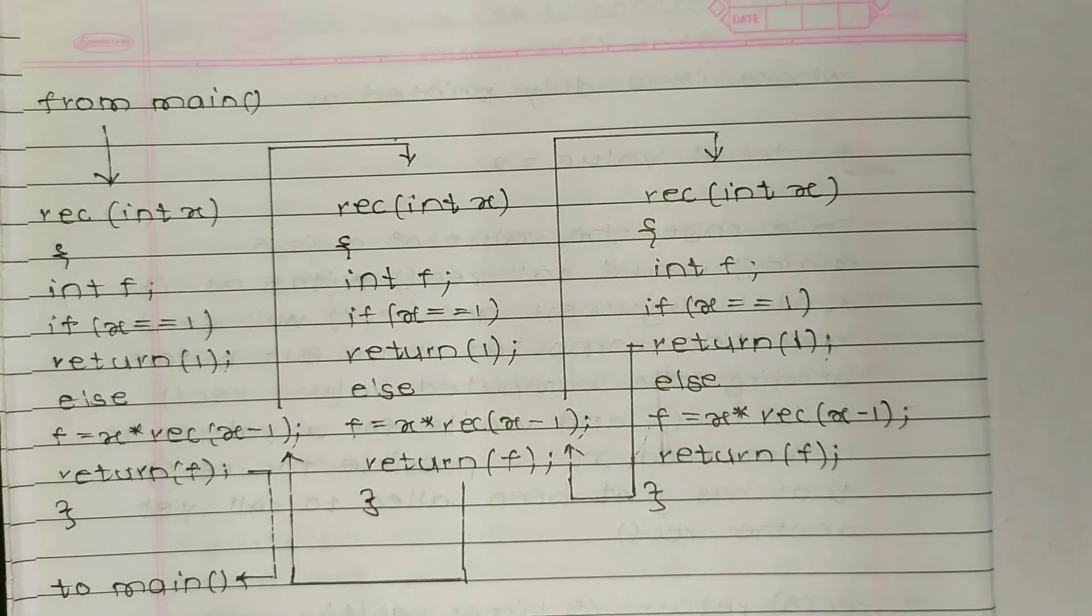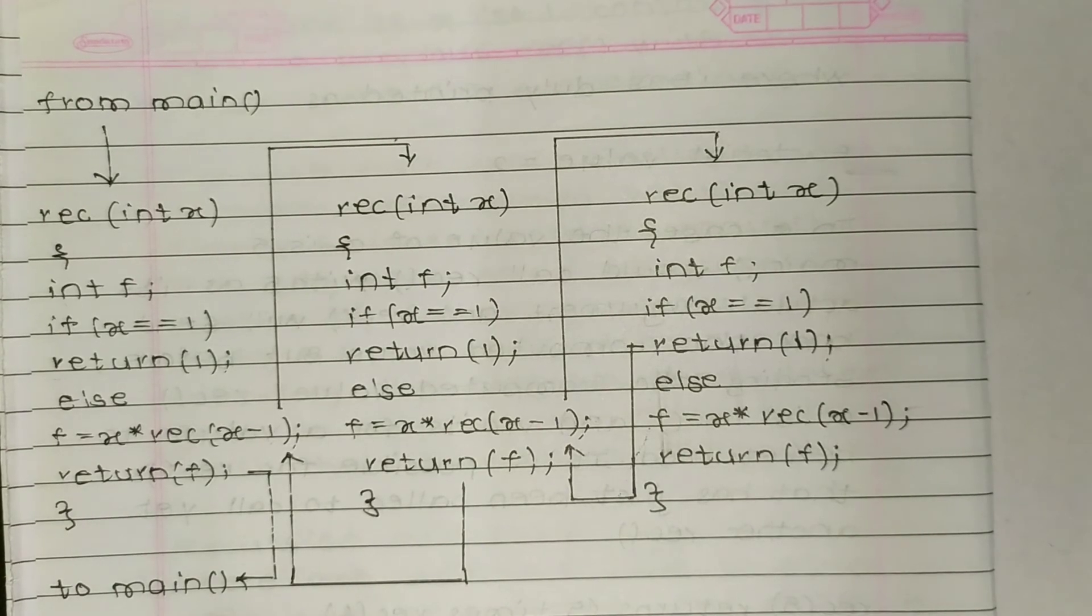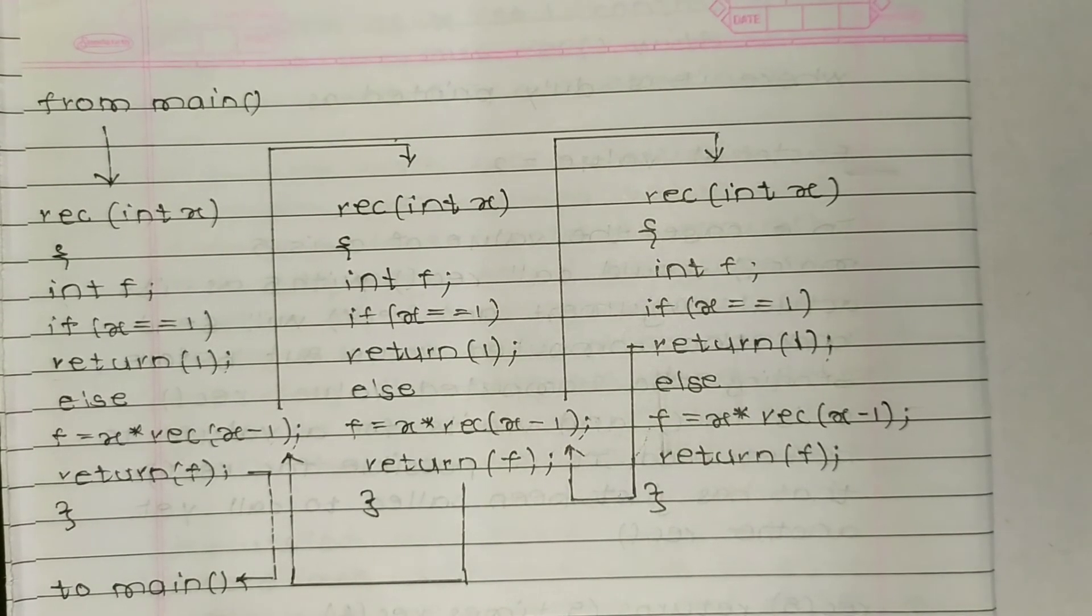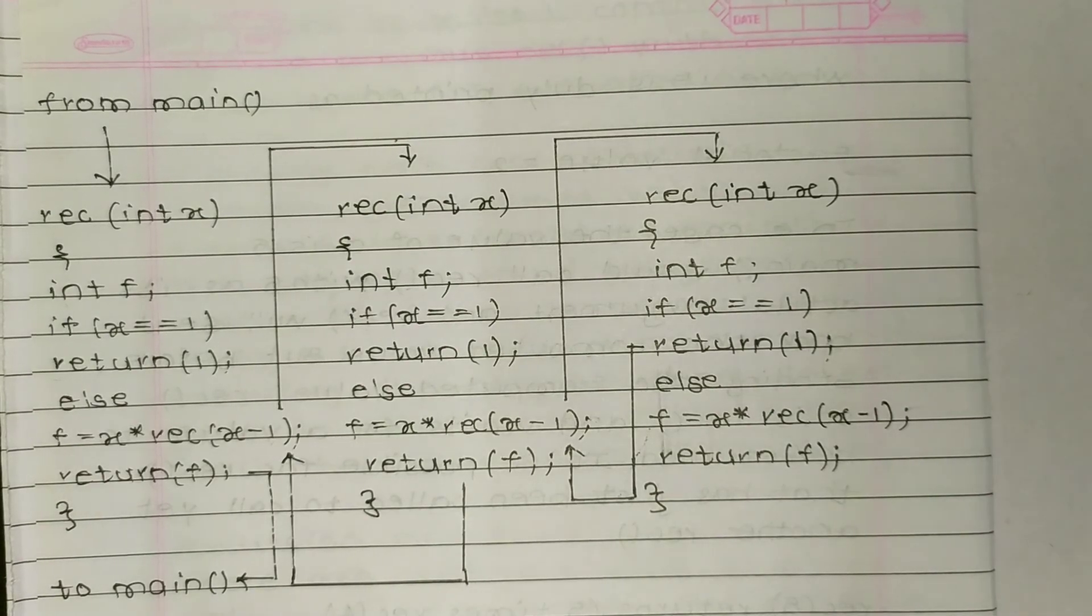Now rec is 1, so x is 1. It will be compared in the if block: x equals 1. Since 1 equals 1, x is 1 now, so it will be returned to main. That is how this recursion function is working.